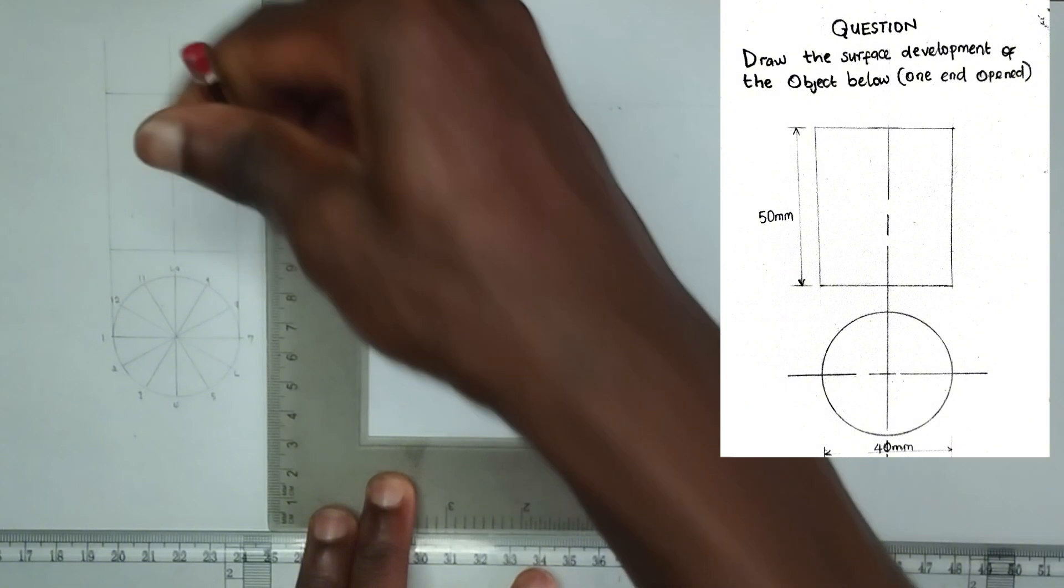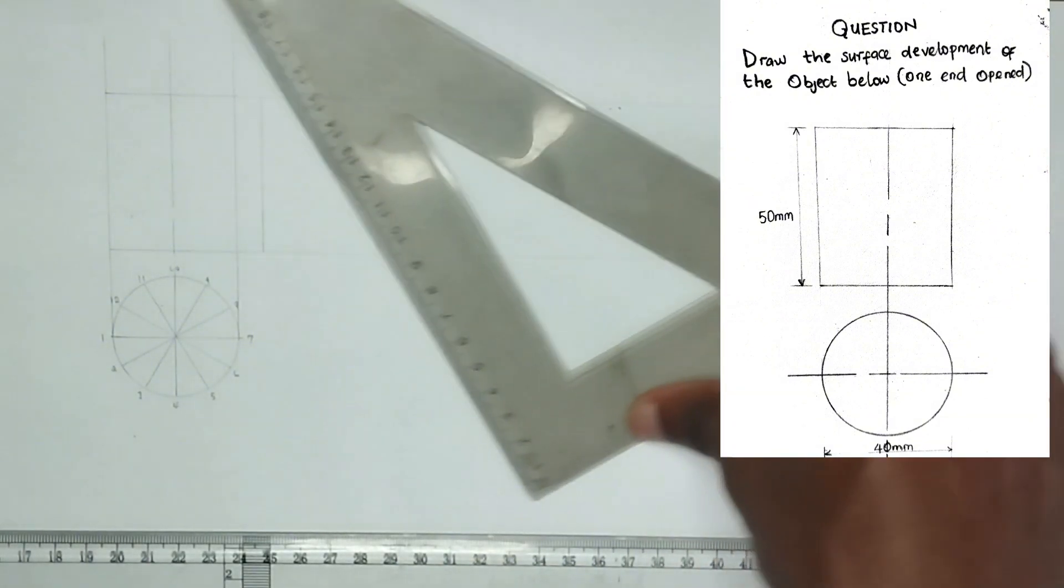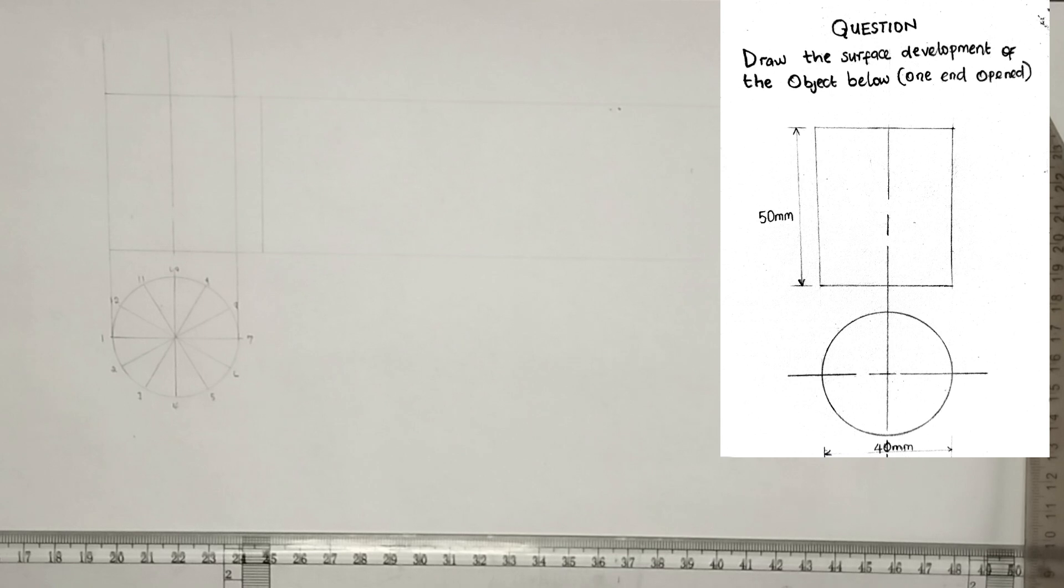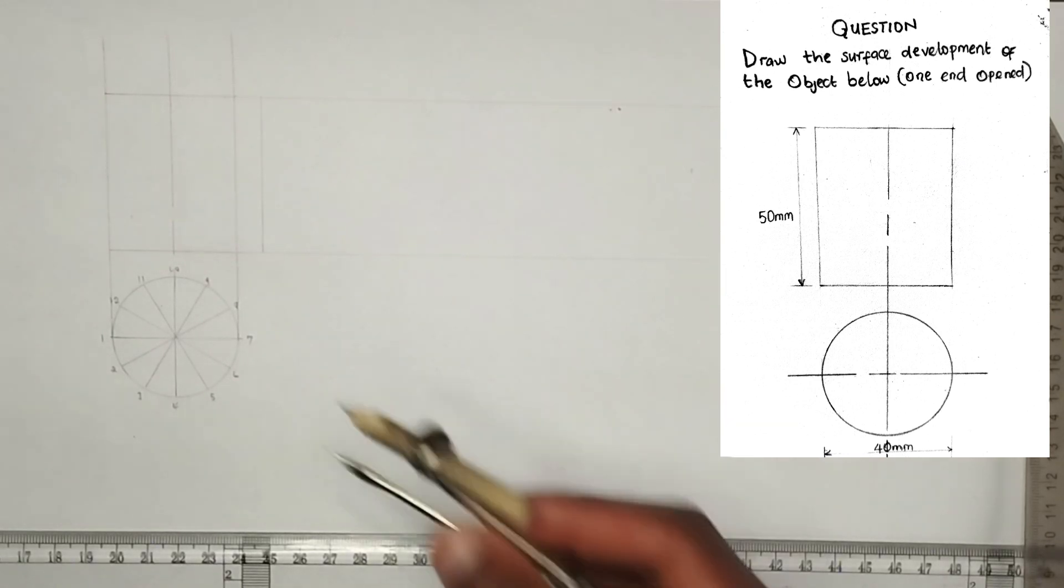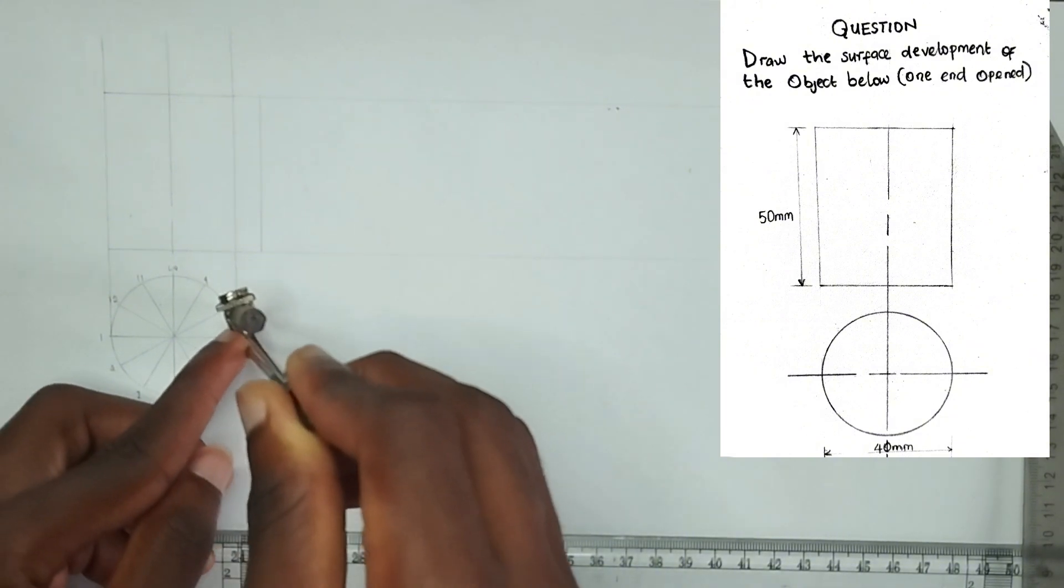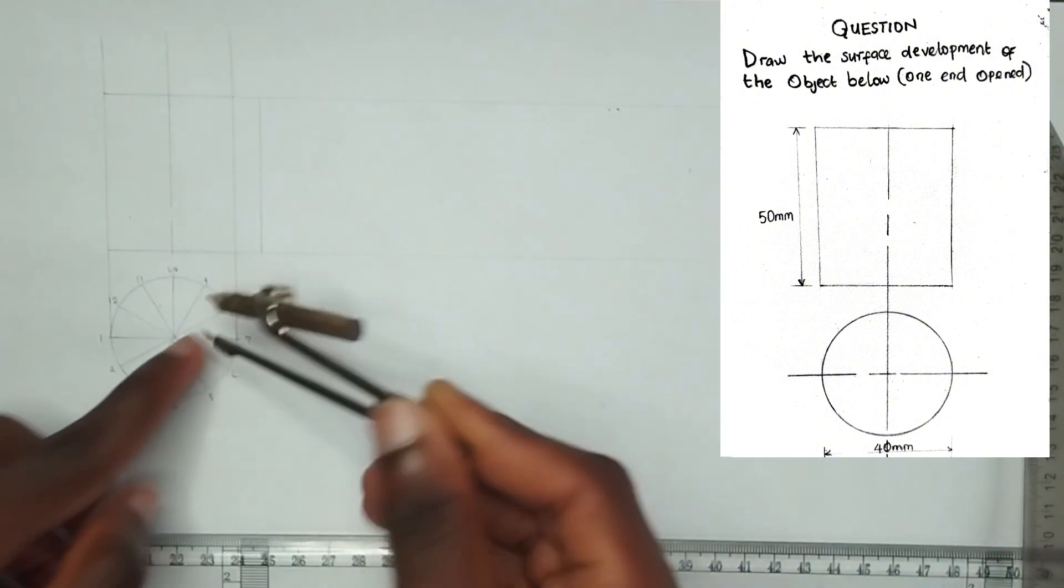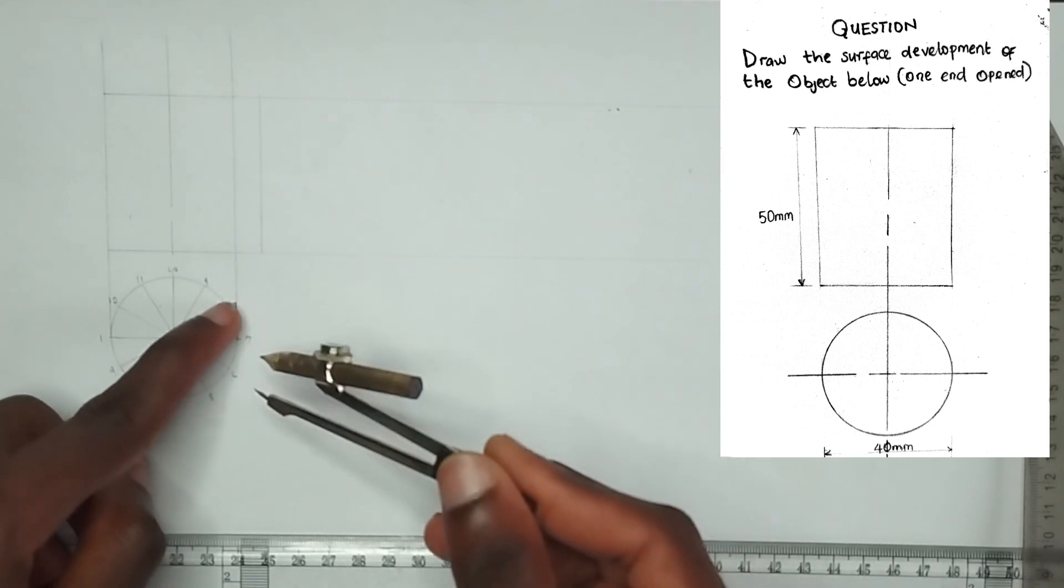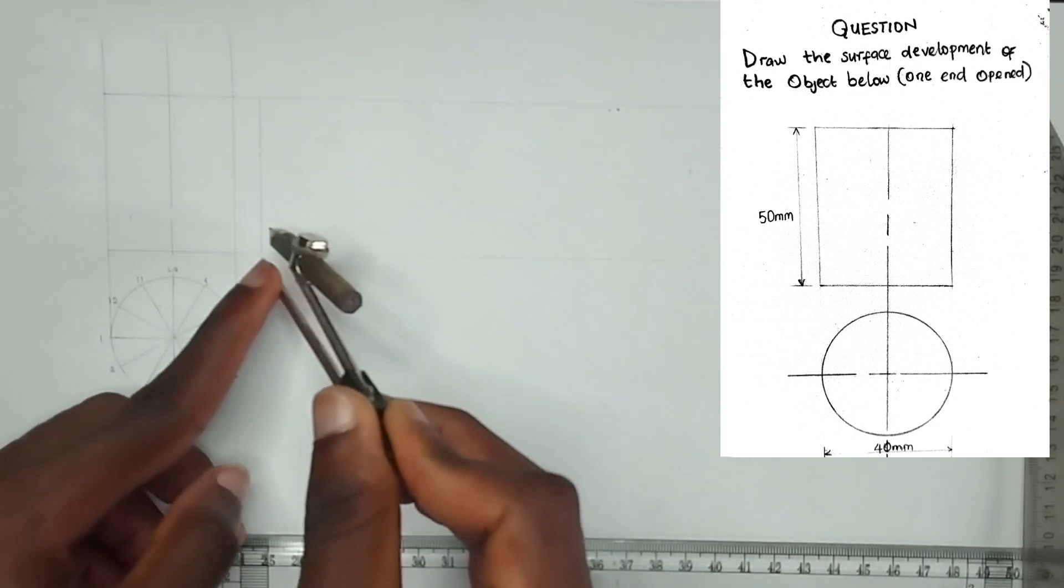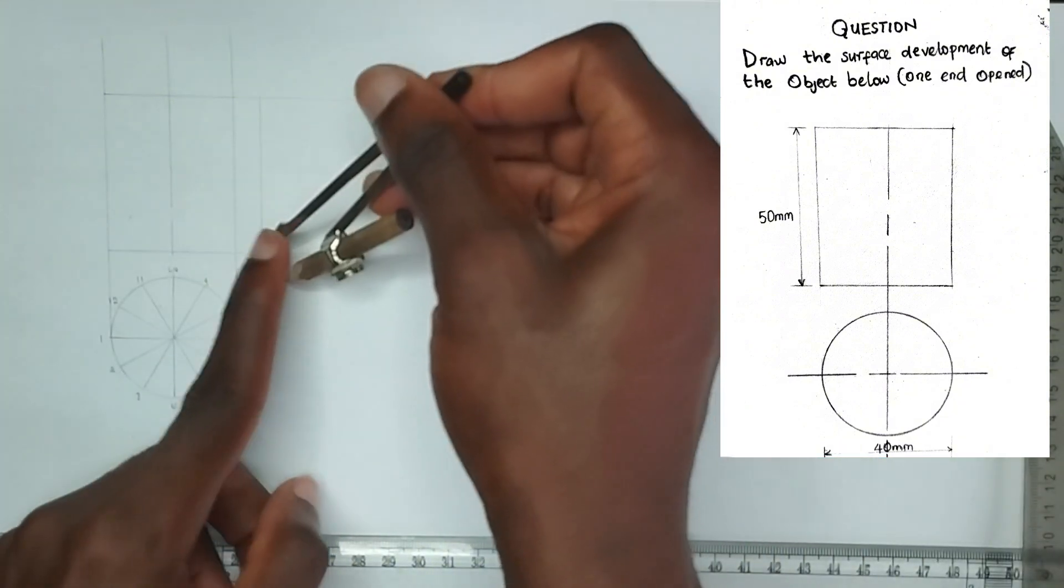So now I'm going to pick my compass then pick this point and this point on my circle. You can pick any points, just make sure it's the length between these two points. Then I'm going to mark 12 points like this.